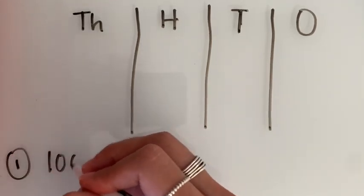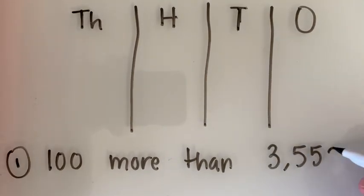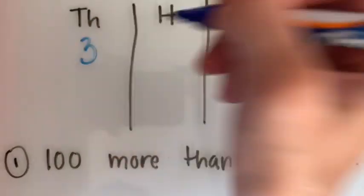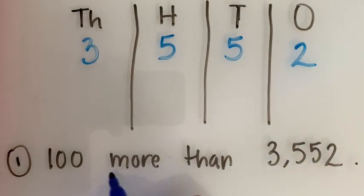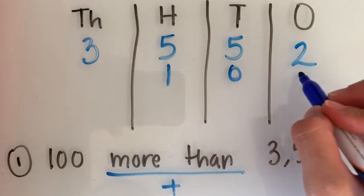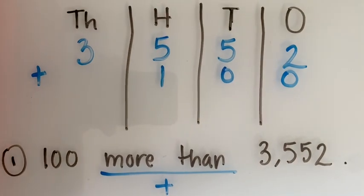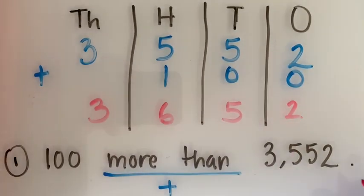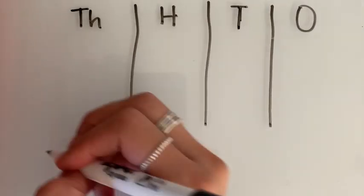Our first example says 100 more than 3,552. So we need to find what 100 more than 3,552 is. We're going to start by plotting 3,552 on the place value chart in the appropriate place value. More than stands for add, and 100 we're going to add to our place value chart as well. We're going to place the one on the hundreds place and then the other zeros. Then we're going to add the numbers together and we find that our answer is 3,652. Don't forget the comma between the thousands and the hundreds place.